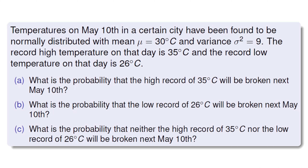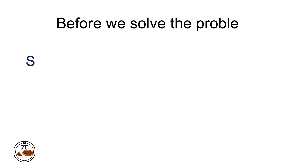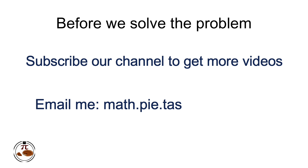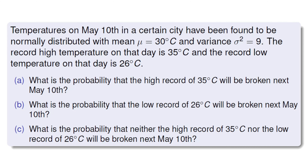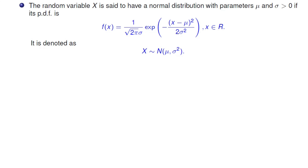And thirdly, what is the probability that neither the high record of 35 degrees nor the low record of 26 degrees will be broken next May 10th? Now this is our problem — can you solve it? Alright, so in order to solve this problem, we want to firstly introduce some basics about normal distribution.